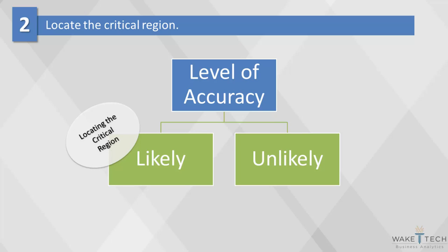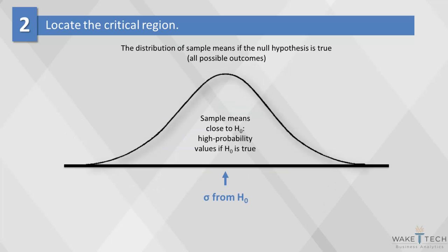The critical region consists of outcomes that are very unlikely to occur if the null hypothesis is true, or in other words, the sample means that are almost impossible to obtain.